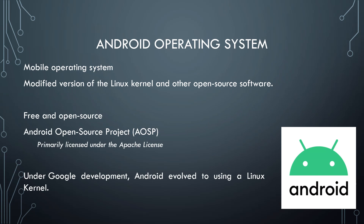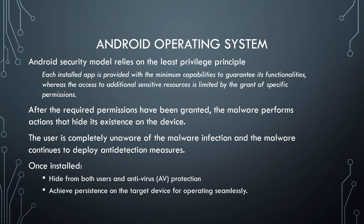The Android operating system is a mobile operating system that uses a modified version of the Linux kernel and other open source software. It is free and open source, under the Android Open Source project, primarily licensed under the Apache license. Under Google development, Android evolved to use a Linux kernel. The Android security model relies on the least privileged principle, where each installed app is provided the minimum capabilities to guarantee its functionality, and access to sensitive resources is limited by the grant of specific permissions.